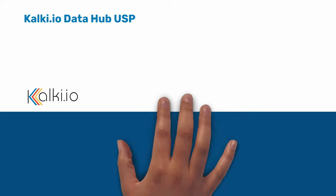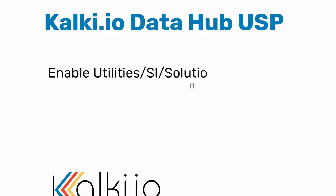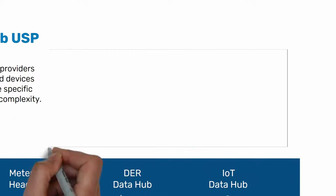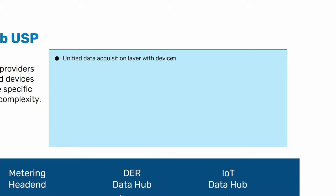Some of the key USPs of Kolki.io utility data hub are: support for a unified data acquisition layer with device management and security, which helps utilities to access and handle all field devices without worrying about device communication protocols and data exchange complexity. A flexible storage layer helps utilities store data on a cloud-based data lake, on-premise historian, or adapt a hybrid model where critical data is stored on-premise and others on cloud.